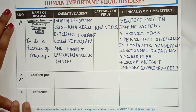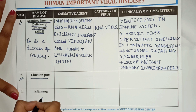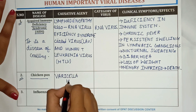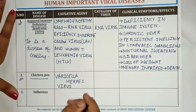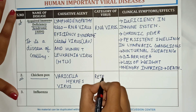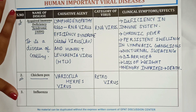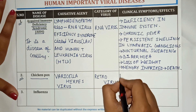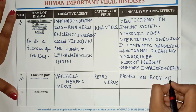The second disease is chicken pox. The causative agent for this disease is Varicella Herpes virus. The category of virus is retrovirus. The clinical symptoms related to this disease are rashes on the body with fever.